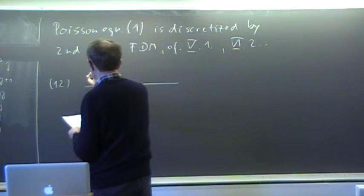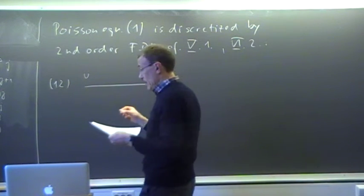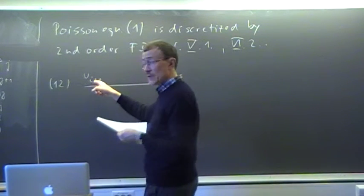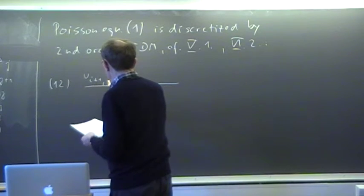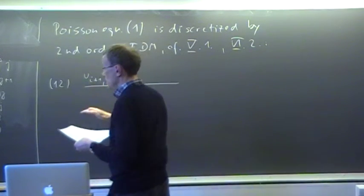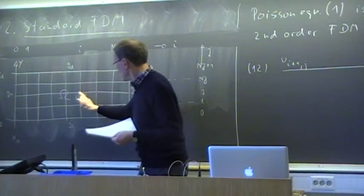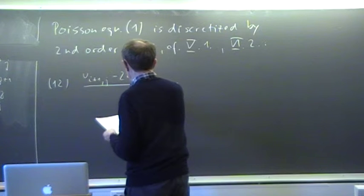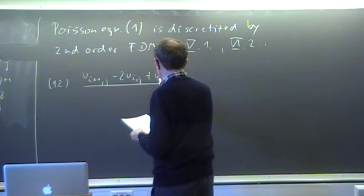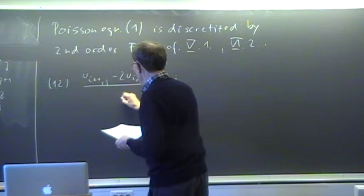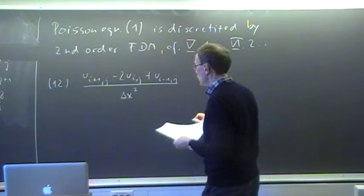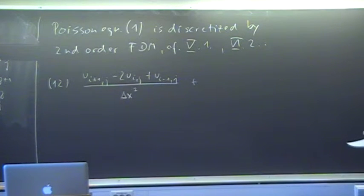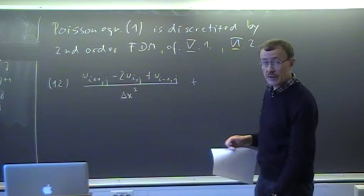The second derivative first in x is, as we have already seen for the heat equation: u_{i+1,j} minus 2u_{i,j} plus u_{i-1,j}, divided by delta x squared. That is as we discussed before — the index i is taken as the first index, and the j index stays as it is.